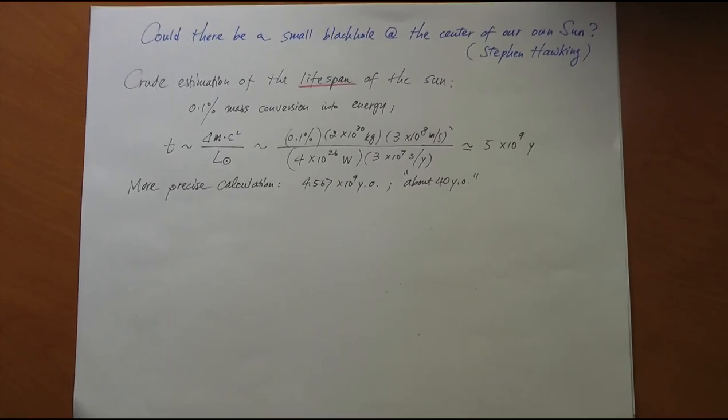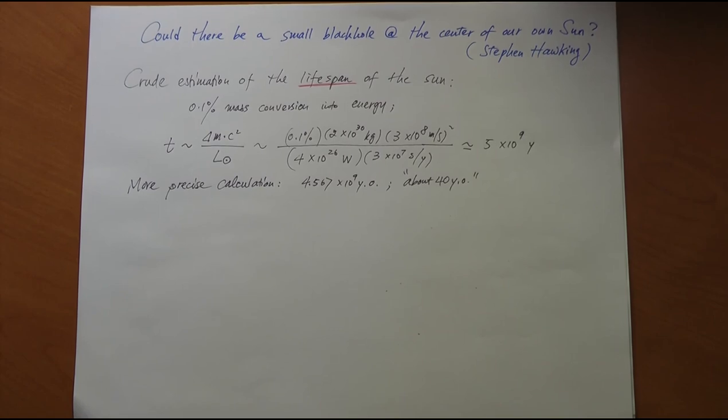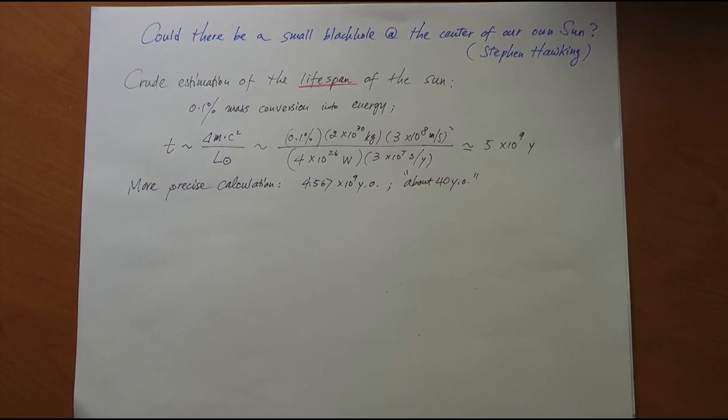This could mean that this model is not correct, something else is going on, but it could also have alternative explanations such as neutrinos may have a mass, a small rest mass. This is still an open question. One of the more interesting possible solutions to that problem, even though a little bit radical, was proposed by the famed Stephen Hawking. Hawking believed that at the center of our sun there may be a mini black hole.